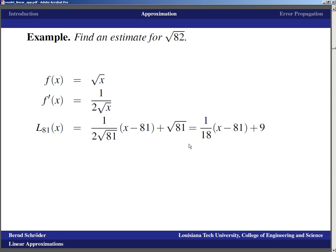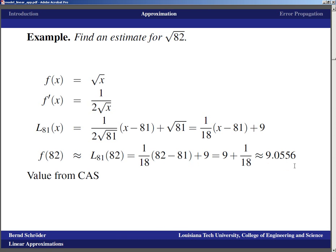We can work out what the square root of 81 is, so we get one-eighteenth (x - 81) plus nine. That would mean that f(82) is approximately the linear approximation at 81 of 82, which is one-eighteenth (82 - 81) plus nine, so that's approximately 9.055556. If we compare that with the value from a computer algebra system or a calculator, it's approximately 9.0554. This linear approximation gives us the first three digits of the actual value.